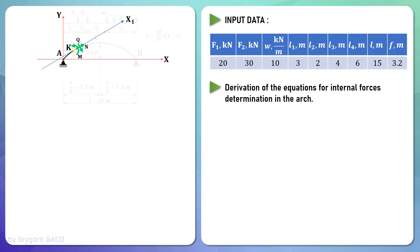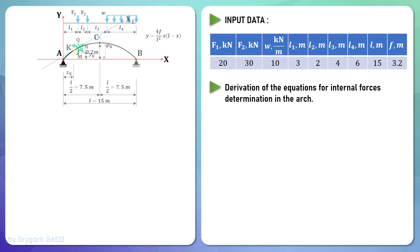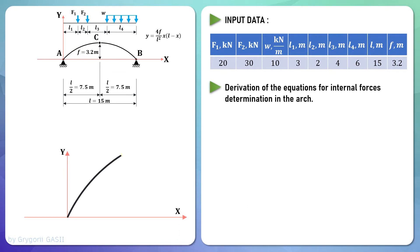Where axis X1 is the tangent to the arch in section K. Coordinates YK and XK are the gravity center of cross-section K. The bending moment, shear, and axial forces must be determined all along the arch. It is necessary to write down the static equilibrium equations for the left part of the arch. Let's resume with the full design model of the arch and the left part drawn separately for clarity, and show support reactions in the pinned support.